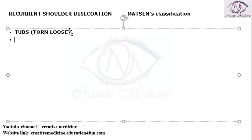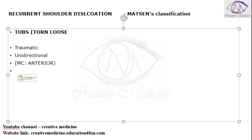First, TUBS: T is for traumatic, U is for unidirectional — that is, most commonly in the anterior direction. B is for Bankart lesion, which is seen in these patients. And S is for surgery, which is arthroscopic Bankart surgery or Hill-Sachs repair.